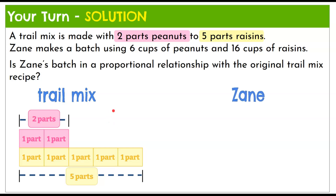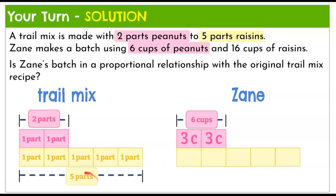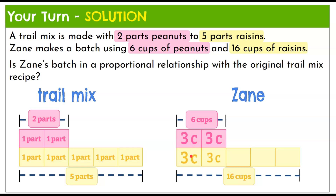Now let's look at Zane's recipe. Zane starts with six cups of peanuts, which must go into two equal parts. Six divided by two is three, so each part is three cups for his peanuts. Now for the raisins, we have five equal parts, and given what we found with the peanuts, each part would need to be three cups as well. So: three, six, nine, twelve, fifteen.